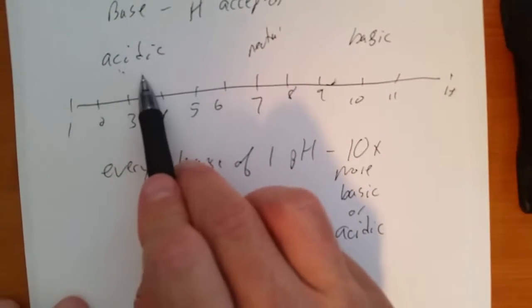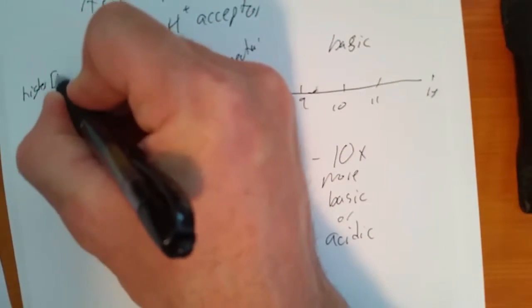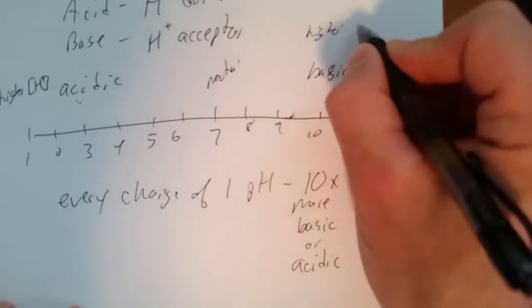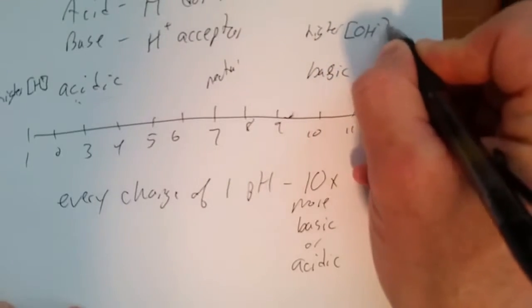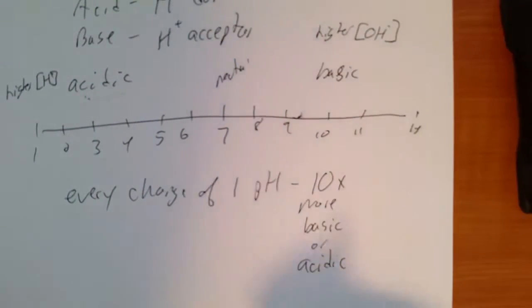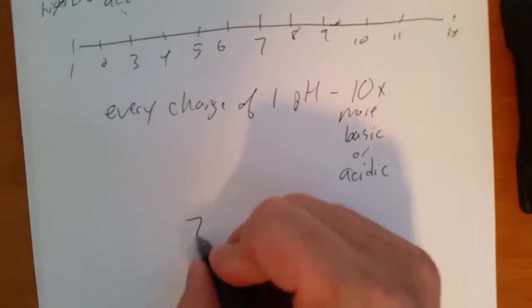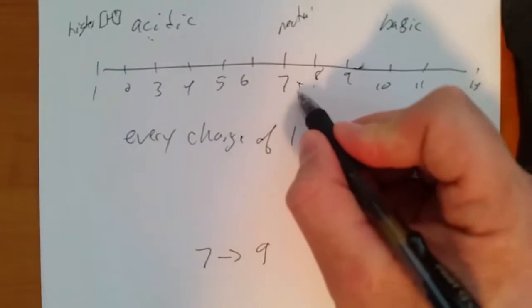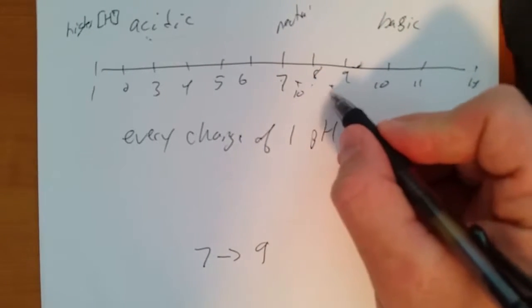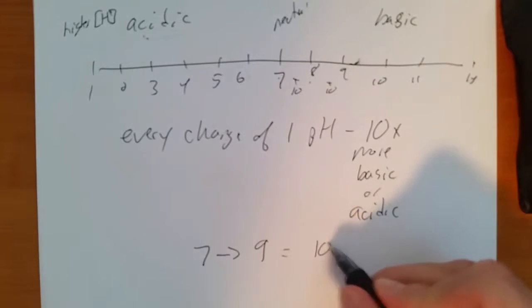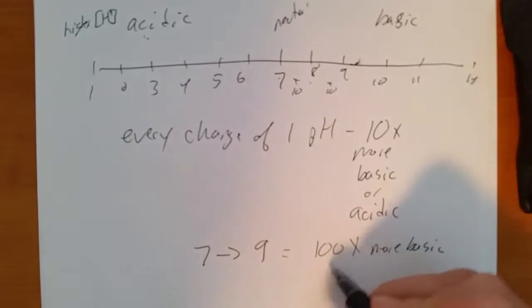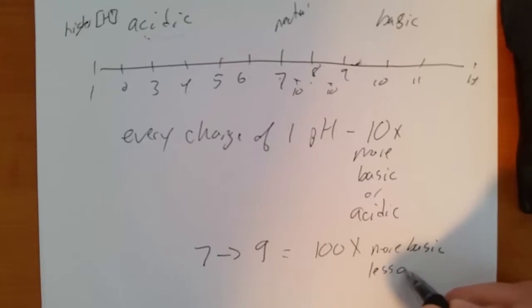Acidic means higher concentration of H+. Basic means higher concentration of OH-. So let's say we're going from a pH of 7 to a pH of 9, that's 10 times 10 to go from 7 to 8, times 10 to go from 8 to 9. So that would be 100 times more basic, or 100 times less acidic.